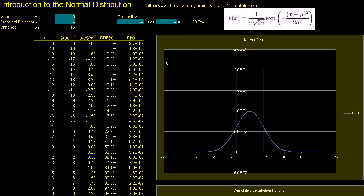If you go onto Wikipedia and type in normal distribution, this is what you would see. I literally copied and pasted this from Wikipedia, and I know it looks daunting with all these Greek letters. But this sigma right here is just the standard deviation of the distribution. We'll play with that in this chart. You know what the standard deviation is in general, but this is the standard deviation of this distribution, which is a probability density function.